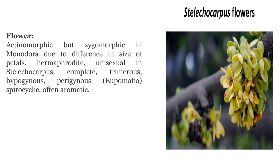Flowers are actinomorphic, but zygomorphic in Monodora due to differences in the size of petals, and hermaphrodite, meaning bisexual. Unisexual in Silocarpus. Complete, meaning presence of all the whorls. Trimerous, hypogynous — that means superior ovary — perigynous in Eupomatia. Spirocyclic and often aromatic.